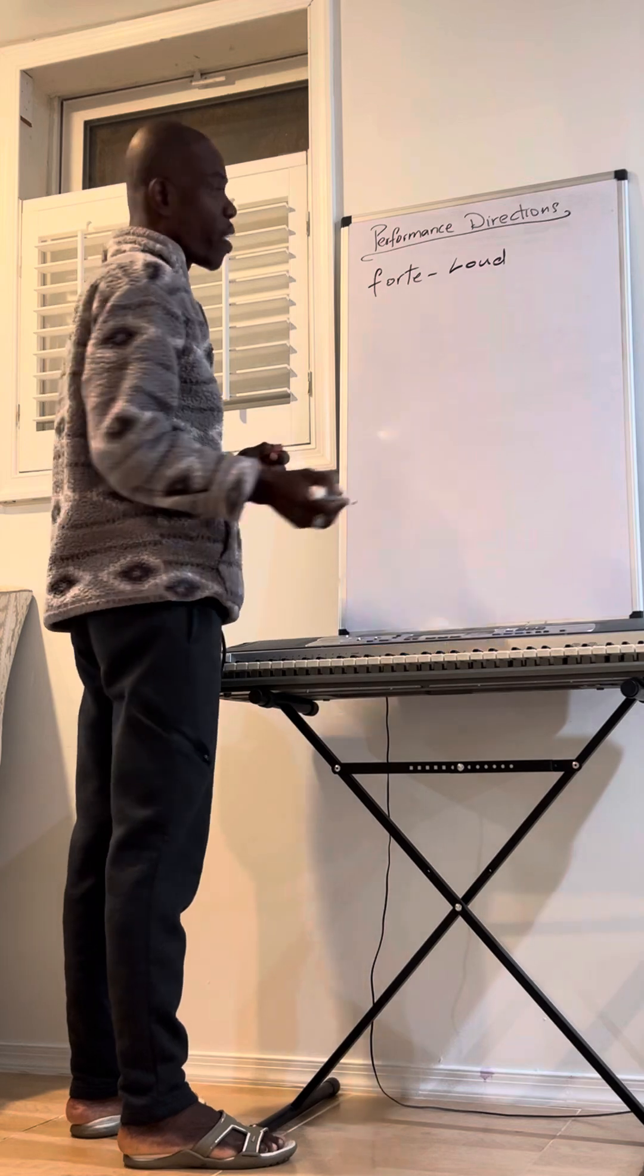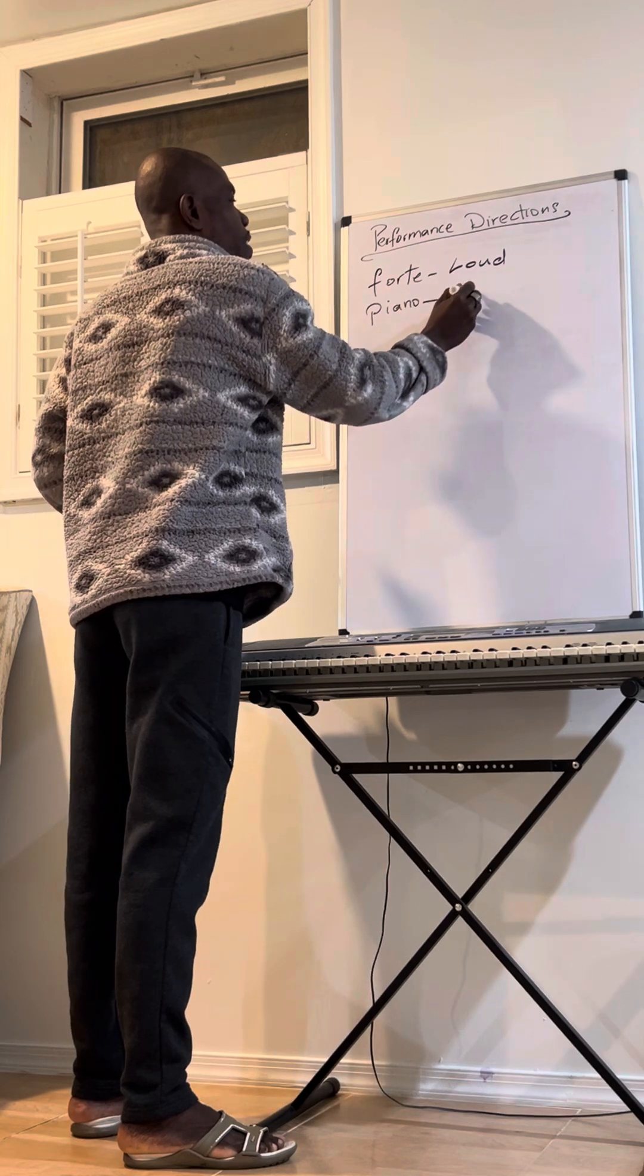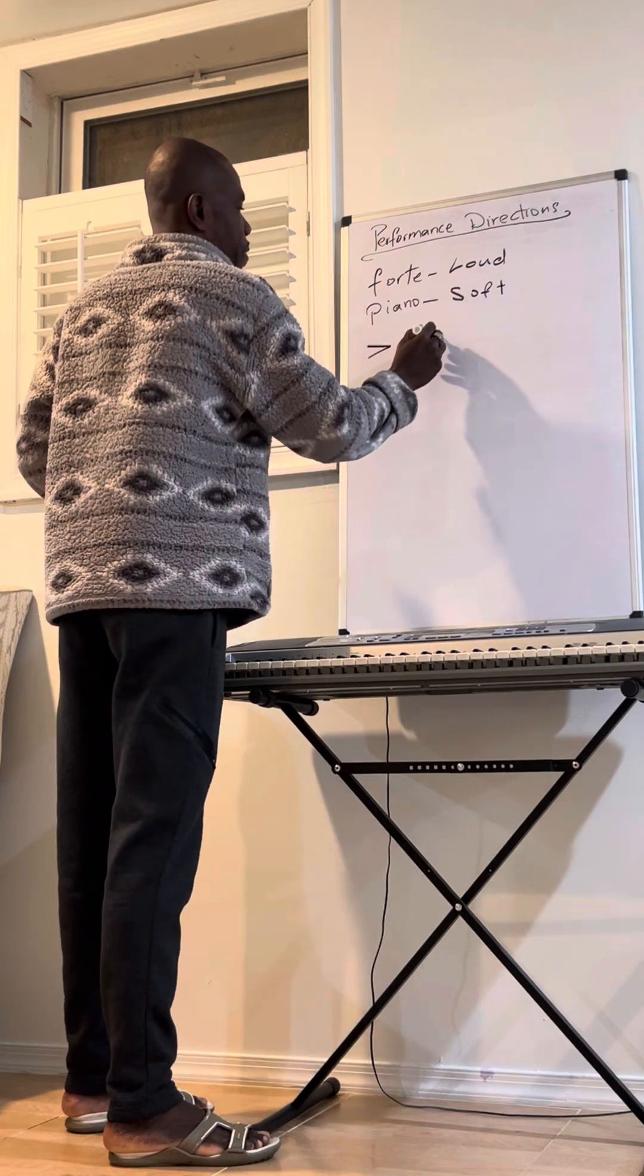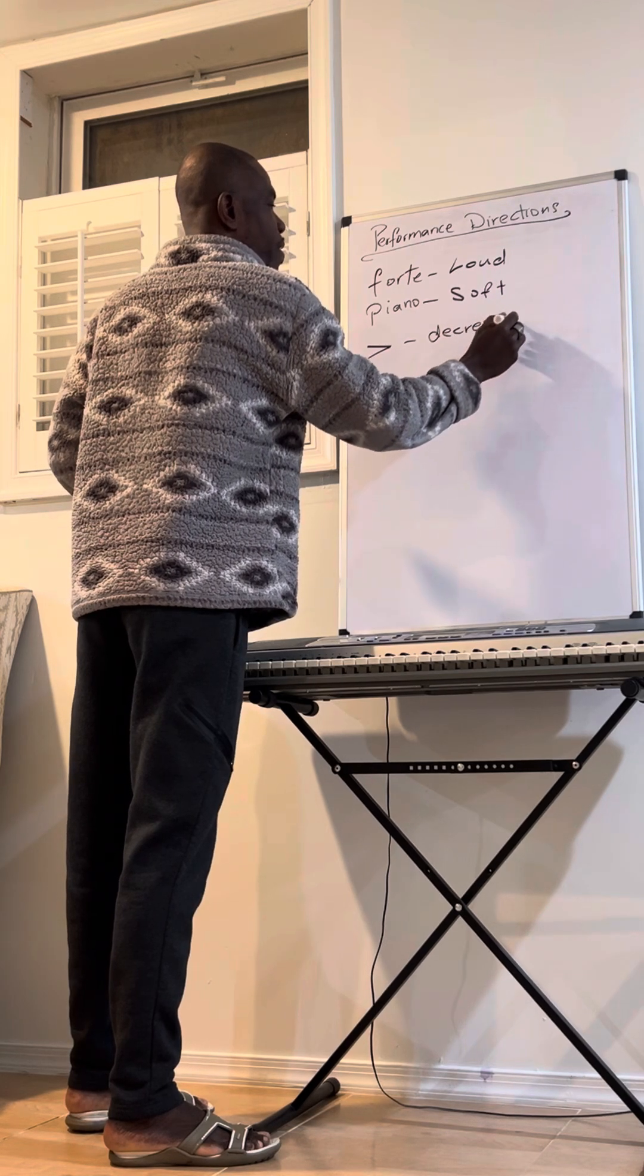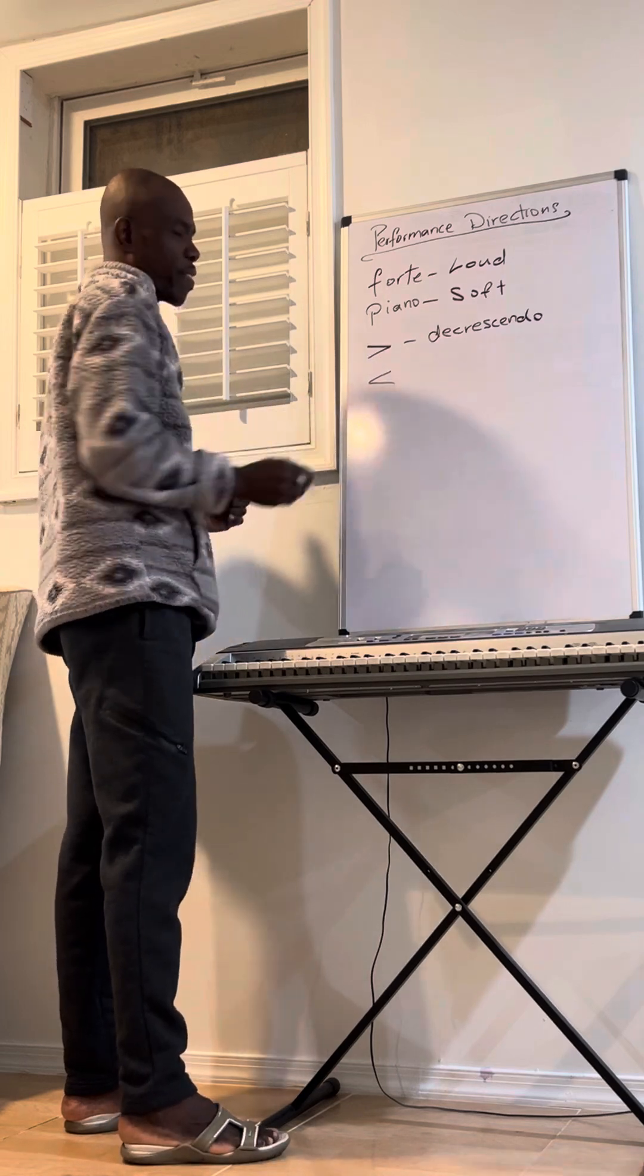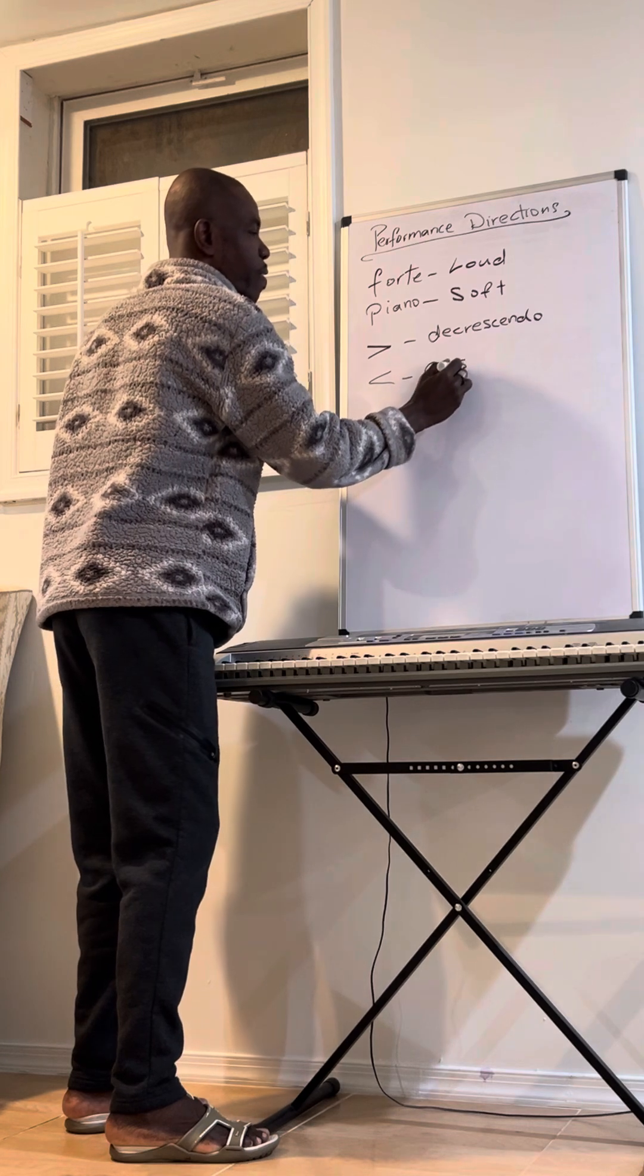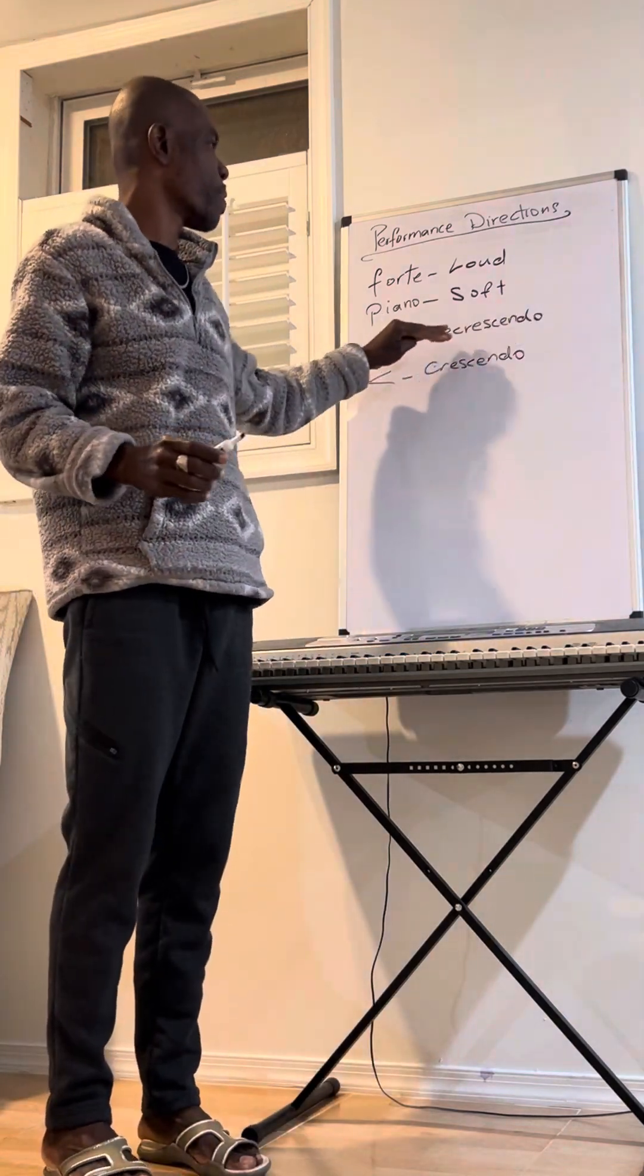If you want to play soft, you will see piano. You will see a sign like this that means to decrescendo. And this is showing to get loud. See? Crescendo. Which means to get louder. This means to get softer.